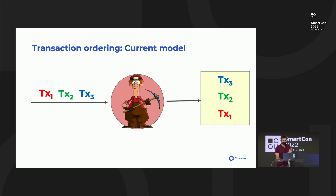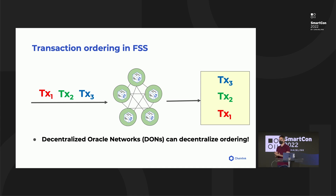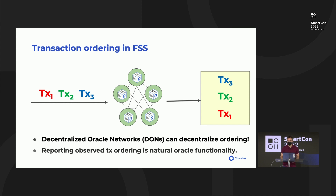To address the problem, what we can do — and it's natural to do this in a blockchain system — is decentralize the process of ordering transactions. We can have a committee perform the ordering instead of leaving it up to an individual validator. A natural choice of committee is a DON, a Decentralized Oracle Network. We plug in a DON instead of a validator in this process of ordering transactions. This may seem a little strange to do with an Oracle system, but I would actually argue this is a very natural functionality — the DON is observing something off-chain, namely the ordering of transactions, and reporting it on-chain. That's basically what oracles do.